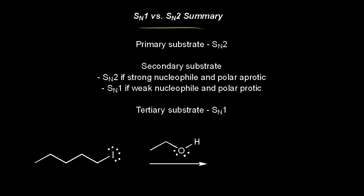The first thing we're going to look at is the structure of our substrate. For this reaction, we have a primary alkyl halide — a primary substrate. So we need to think about an SN2 reaction, which requires decreased steric hindrance, and that's what we have with a primary alkyl halide.